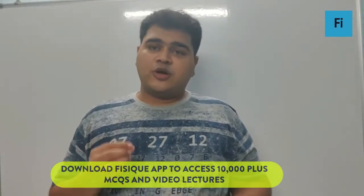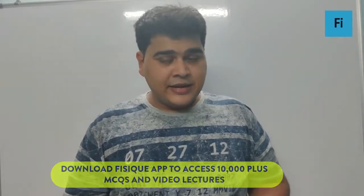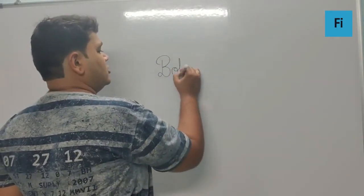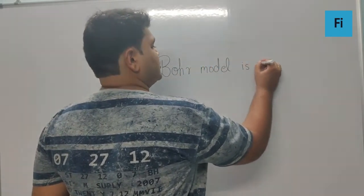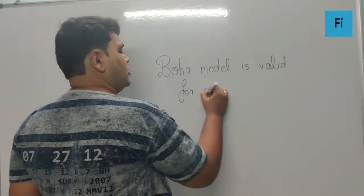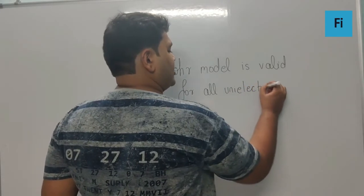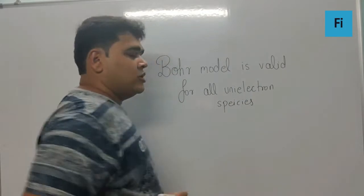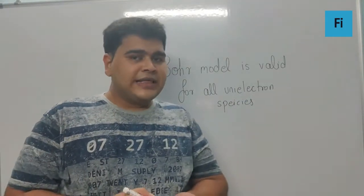The next question asks: for which one of the following is the Bohr model not valid? The Bohr model is valid for all uni-electron species, which means all atoms that have only one electron.